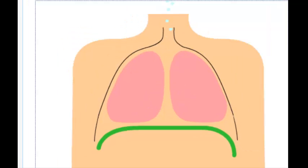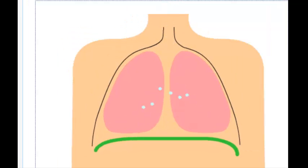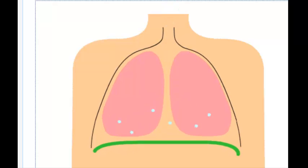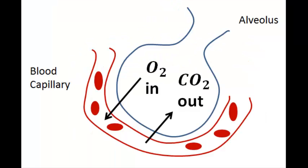So these lungs supply blood with oxygen and take away carbon dioxide. This happens inside the lungs where blood inside the capillaries and air inside very thin pipes called alveoli come very close together.